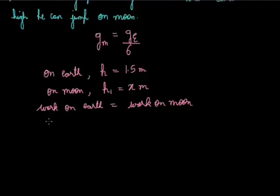We know that the work done on Earth by a man to jump to a height of 1.5 meter is: mass × g_Earth × 1.5. That is equal to work done on Moon: mass × g_Moon × x, where x is what we have to calculate.